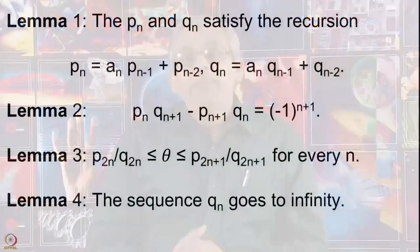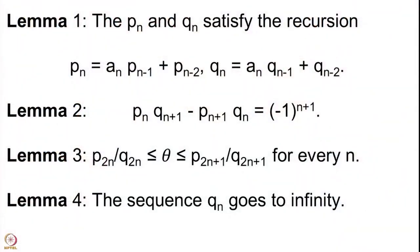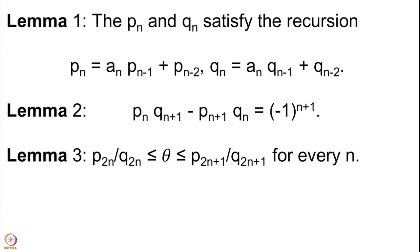This theorem was proved using 4 lemmas. The 4th lemma — that the sequence q_n goes to infinity — was proved first using the recurrence relation in lemma 1. Then we proved lemma 3, which says that theta is sandwiched between any 2 successive convergents, with the even one being before theta and the odd one being after theta.